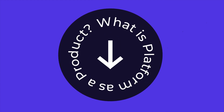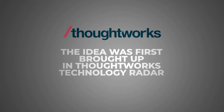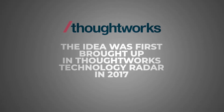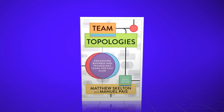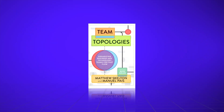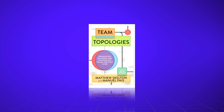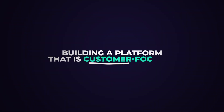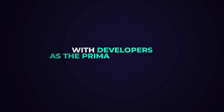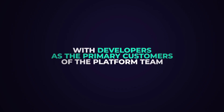So what do we mean by platform as a product? Platform as a product means building, extending, and maintaining your internal developer platform using product management principles and best practices. The idea was actually first brought up in ThoughtWorks Technology Radar in 2017, and it was then popularized among a broader audience thanks to the book Team Topologies by Manuel Pais and Mathias Kelton. So in this context, platform as a product means building a platform that is customer-focused, with developers as the primary customers of the platform team.